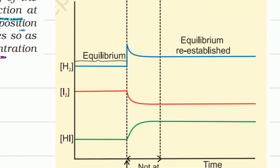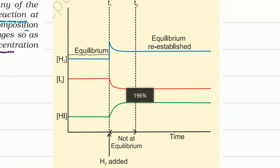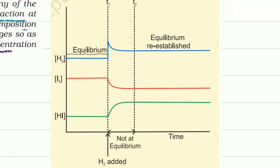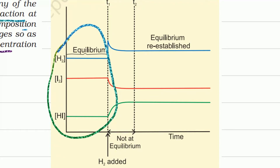Here is a graphical explanation of the concentration change. This shows the equilibrium condition where hydrogen, iodine, and HI are all present. In the first condition at equilibrium state, we increased the concentration of hydrogen.